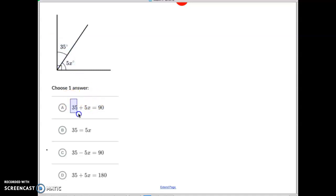Okay. 35 plus 5x equals 90. Well, that one looks good. The equals 35. No, it doesn't work. Oh, wait, wait. This one equals 90. Oh, but this is 35 minus 5x. So that doesn't quite work. So we can't do that one. And this one, 35 plus 5x equals 180. That's not right either. So that's why it's this one.